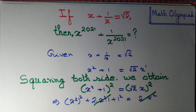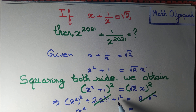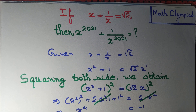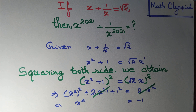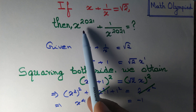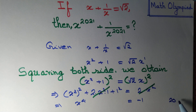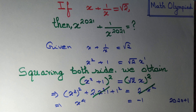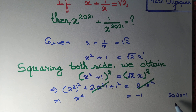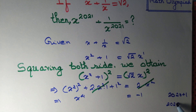So we are left with x to the power 4. Taking the 1 to the right hand side, we get x to the power 4 equal to minus 1. But we want x to the power 2021. Note that 2021 is 2020 plus 1, and 2020 equals 4 times 505.